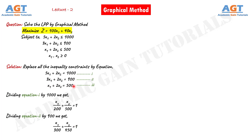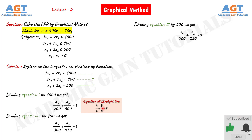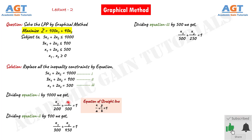Similarly in equation three, we have 500 on the right-hand side. So we will divide the whole equation number three by 500. Dividing equation number three by 500, we get x1 divided by 500 plus 2x2 divided by 500, which gives x2 divided by 250, equals to 1. Now we know that the equation for a straight line is x divided by a plus y divided by b equals to 1, where a is the intercept of the x-axis, b is the intercept of the y-axis, and there is one on the right-hand side. If we compare the straight line equation to these three equations, we can see the same format. In equation one, 200 is the intercept of x1, and 500 is the intercept of x2.